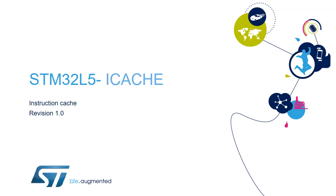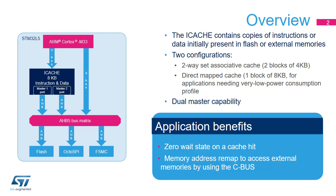Hello and welcome to this presentation of the iCache module, which is embedded in all products of the STM32L5 microcontroller family. The instruction cache, or iCache, is introduced on the CAHB code bus of the Cortex-M33 processor to improve performance when fetching instructions and data from both internal and external memories. It implements a slave port connected to the Cortex-M33 C bus and two master ports connected to the AHB-5 bus matrix.